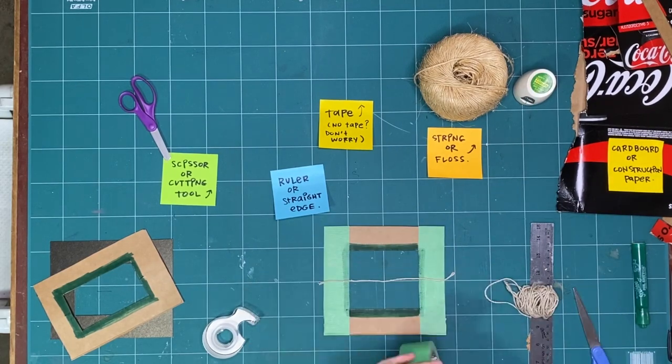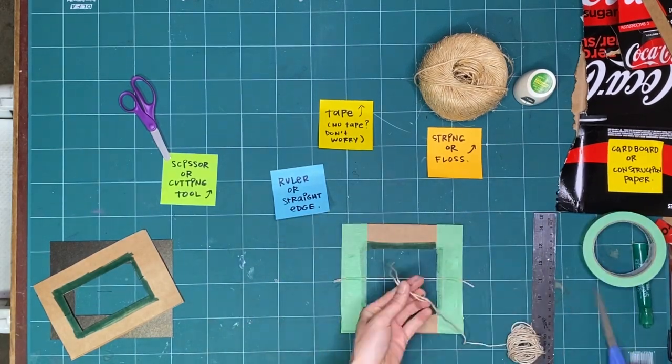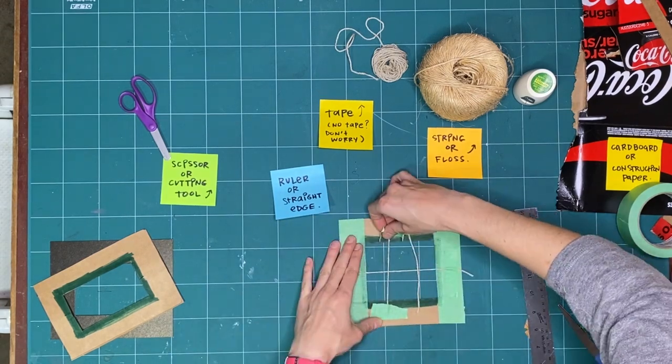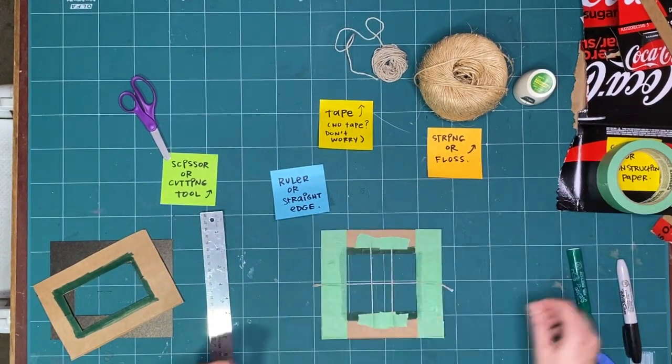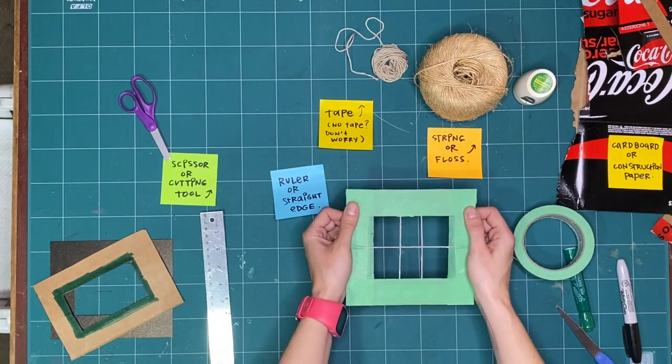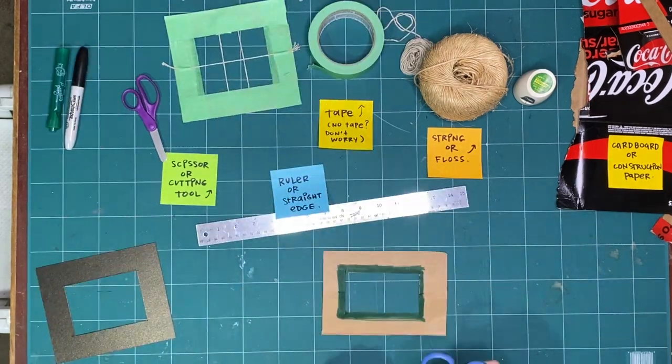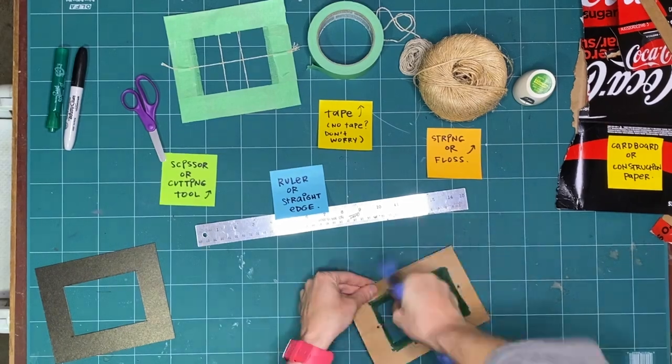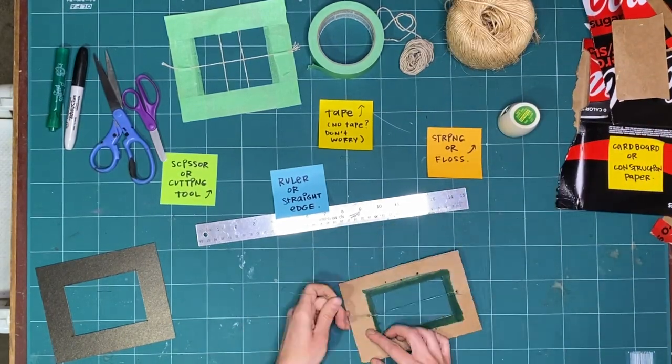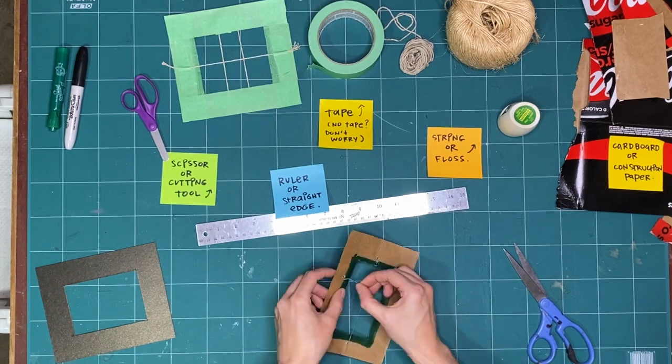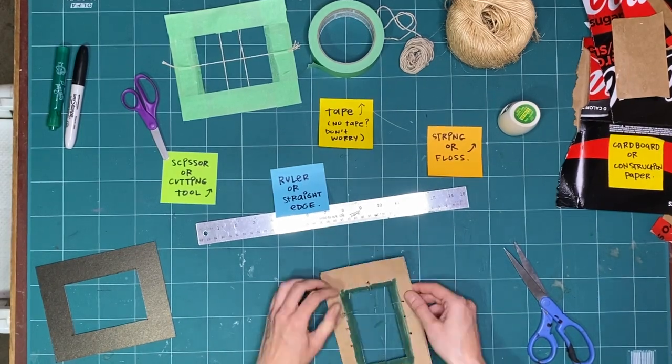Now I'm going to add string to two of my viewfinders. This will make a grid. Try adding string to one of your viewfinders and leaving the other one empty. See if it makes a difference. I like using string because it means I can try and level the things I see on the other side. If you're learning fractions or division at school, the grid helps me divide up my space into even sections and try to make it so my framing is balanced.